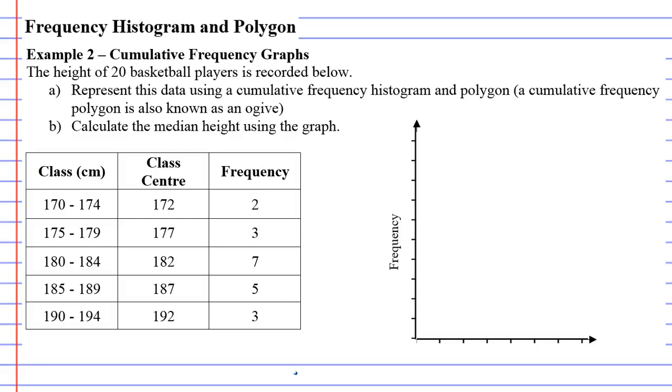So in this video, we're going to cover example two, which is all about cumulative frequency graphs. And here we have the height of 20 basketball players recorded in the table below. And question A says, represent this data using a cumulative frequency histogram and polygon.